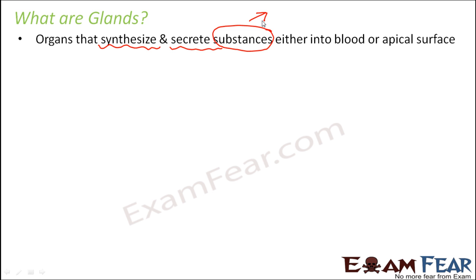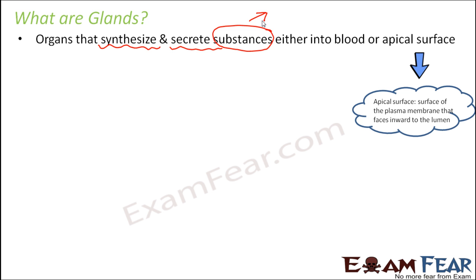There is another way where glands secrete substances on the apical surface. The apical surface means the surface of the plasma membrane that faces towards the lumen — inward to the lumen. Lumen is a cavity; if you have a cylindrical container, the lumen is the inside hollow portion of the cylinder. There are some glands which secrete substances on the inner side of the plasma membrane.